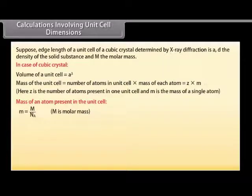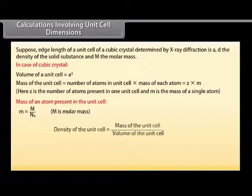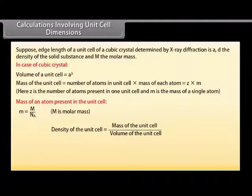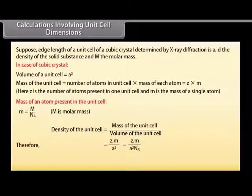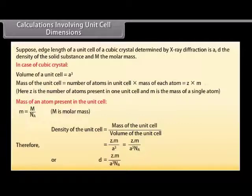Density of the unit cell equals mass of the unit cell divided by volume of the unit cell. Therefore, density D = Z × M / (A³ × Nₐ).